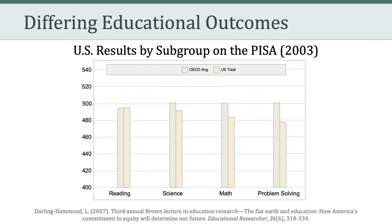Here we can see that the U.S. is pretty close to average in reading, a little bit lower in science, a little bit lower in math, and considerably lower in problem solving. But what's important when thinking about educational equity and equality is thinking about how different subgroups within the United States fare in these four domains: reading, science, math, and problem solving.